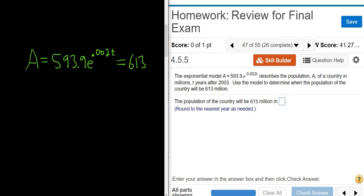So we can divide by this piece here, because it's being multiplied. So this is 593.9. So we end up with e to the .002t, and it's equal to this fraction. And I'm going to leave it as a fraction for now. So 613 over 593.9.